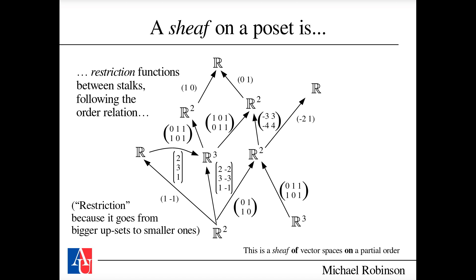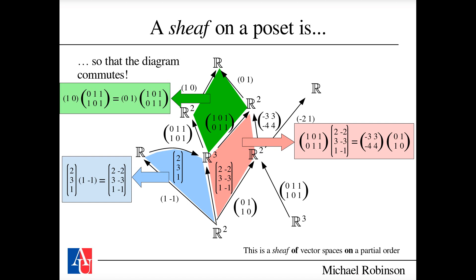The restriction maps are subject to a constraint: the diagram must commute — composition must be path independent. For example, there are two ways to get from R² at the bottom to R³: directly, or by taking a detour through R on the left. Composing those two arrows via matrix multiplication gives the same result either way. This commutativity on all rectangles and triangles in the diagram defines a sheaf on a partial order.